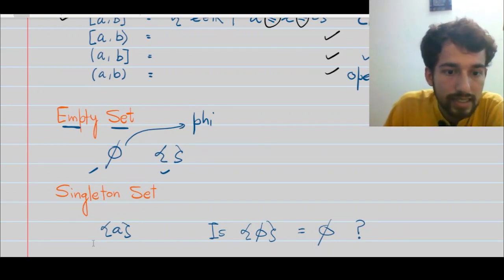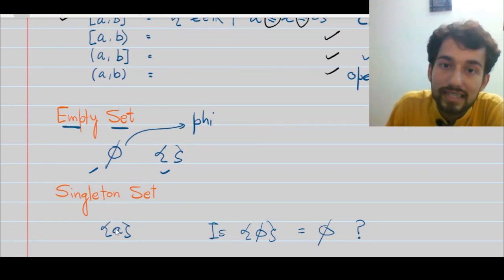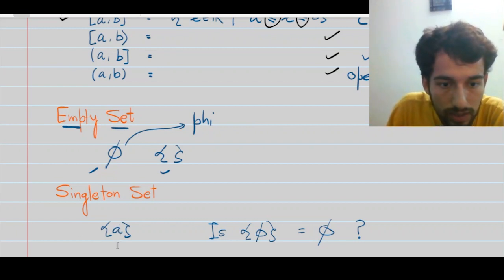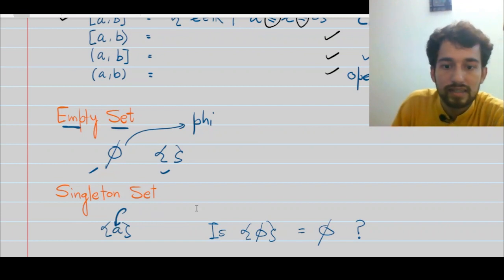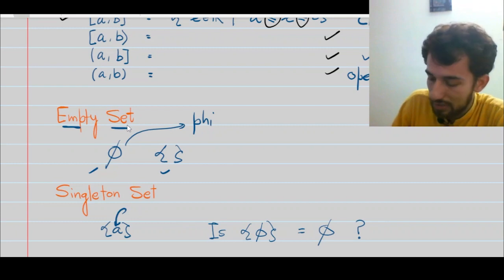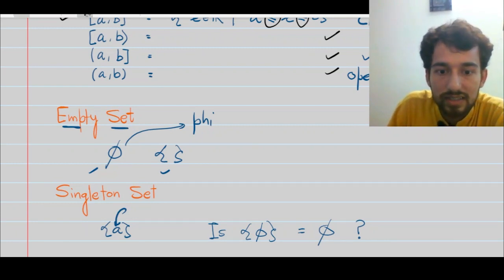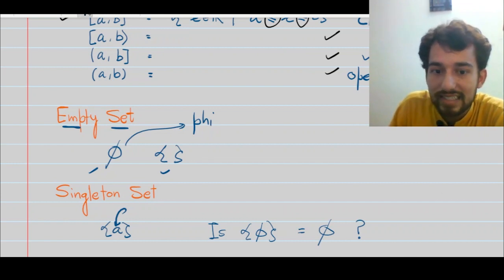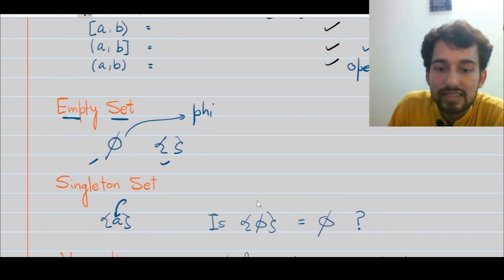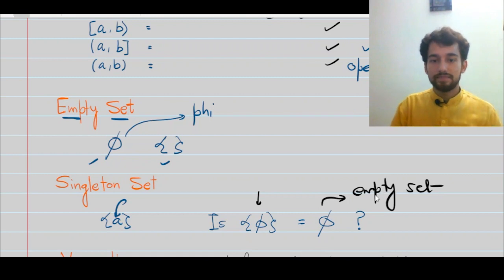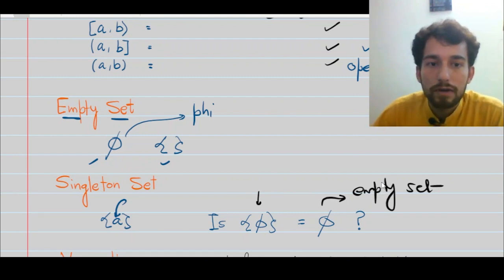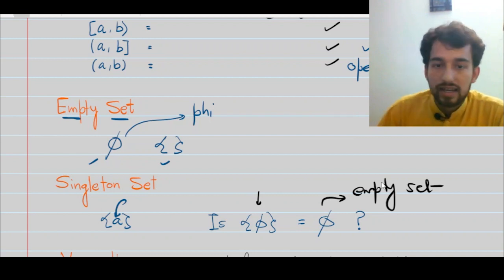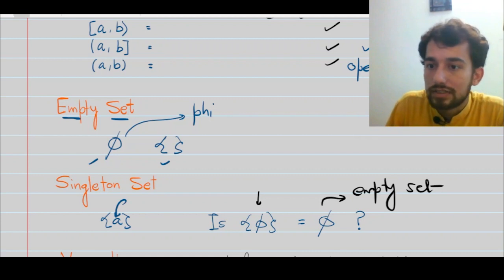A singleton set is a set that contains exactly one element. Here is an example: the set containing element 'a', where the small 'a' is an element of this set. Now here is a question for you: is the set containing phi as an element the same as the empty set? Please pause the video, think about it, and answer in the comment section.